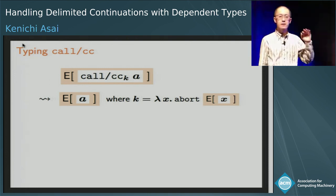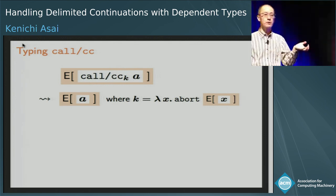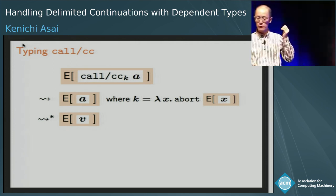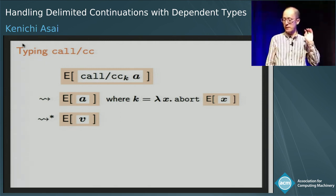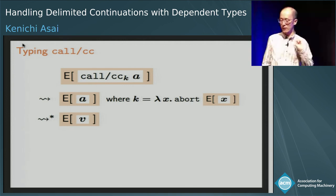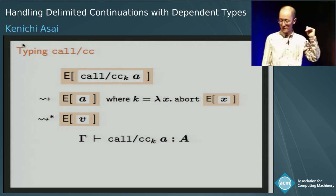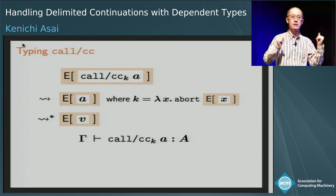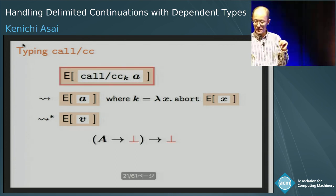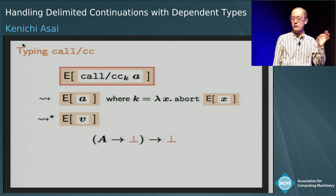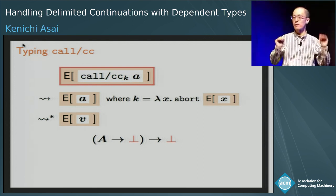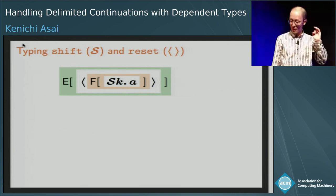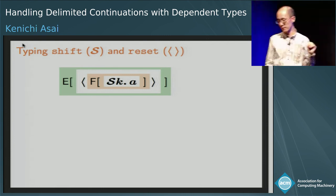This K is abortive. So whatever we do in the computation of A, this expression will eventually evaluate to E applied to some value B. Even if we use K, the surrounding context is aborted and we eventually get E of B. This means that the typing judgment for this expression is concerned only with the input type of the surrounding context E. We are not interested in what E will return. The situation becomes somewhat different for delimited control.